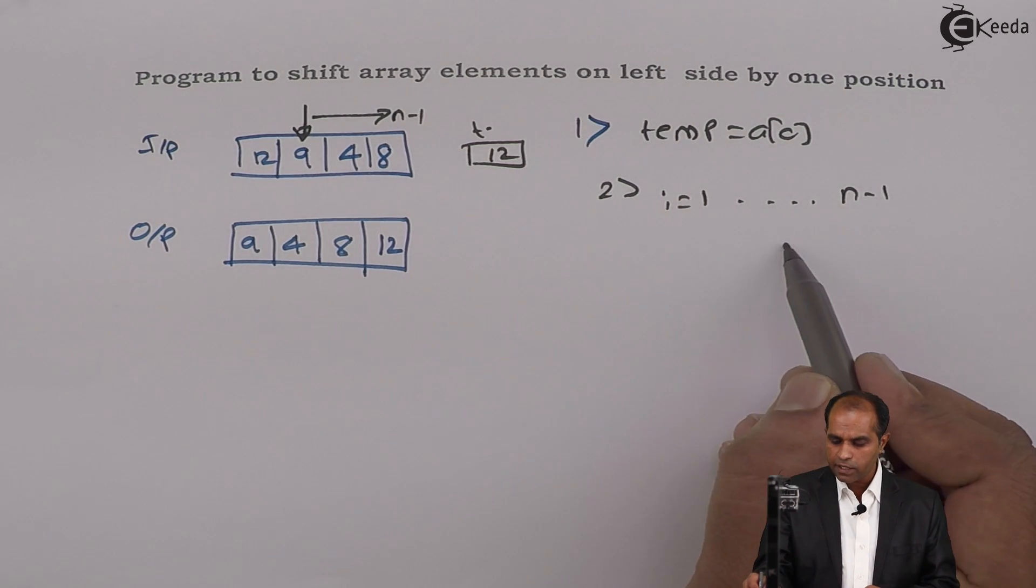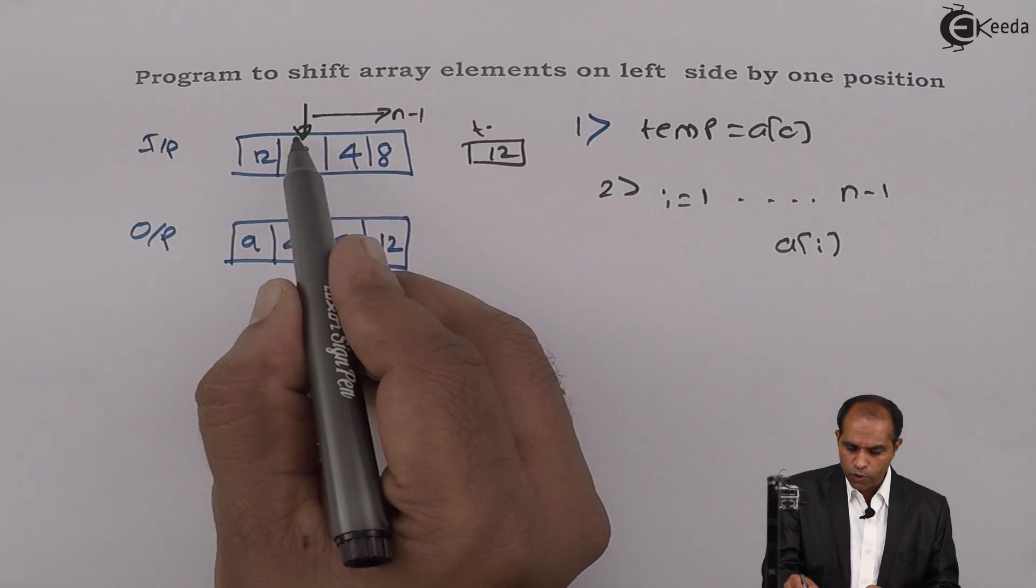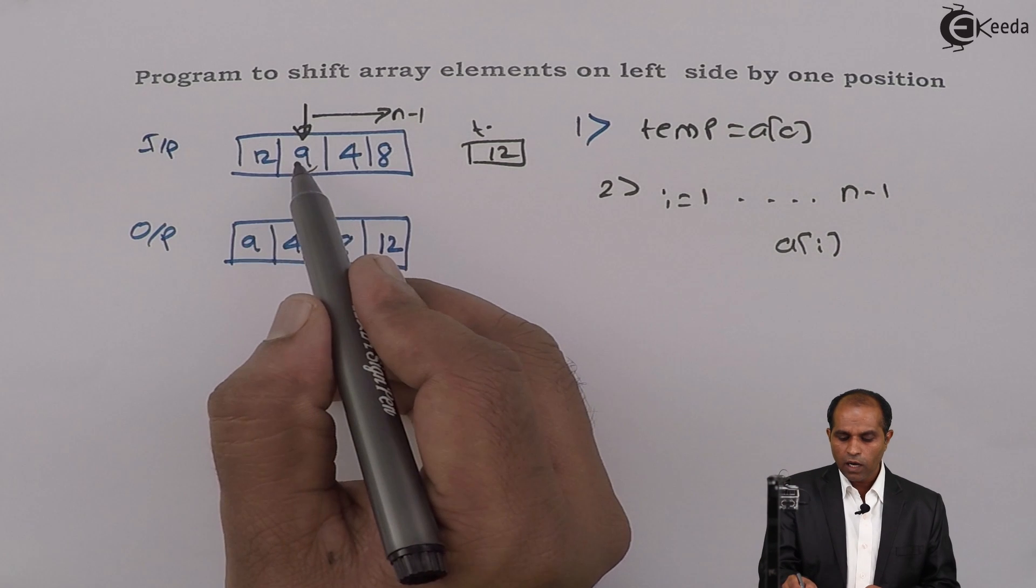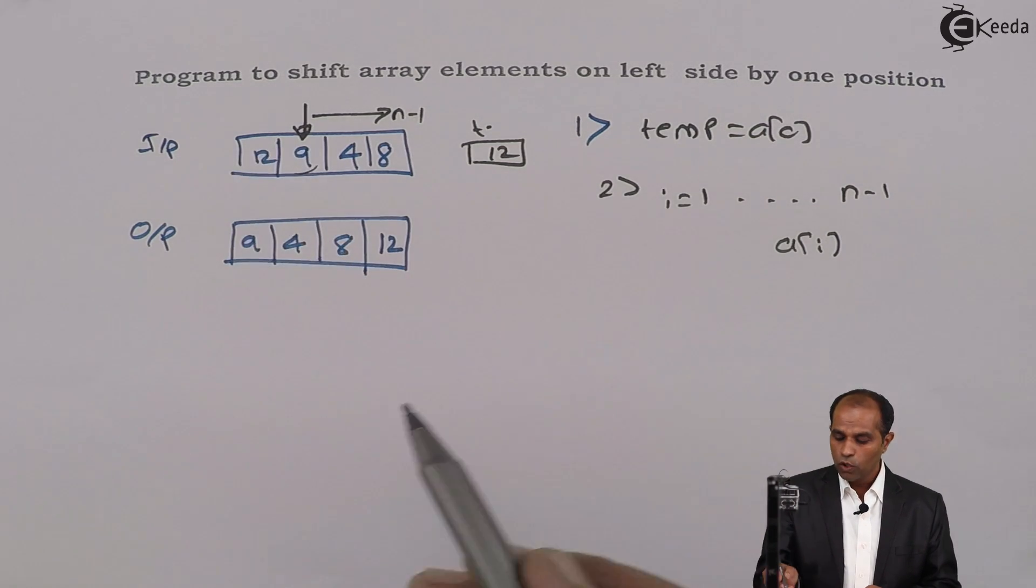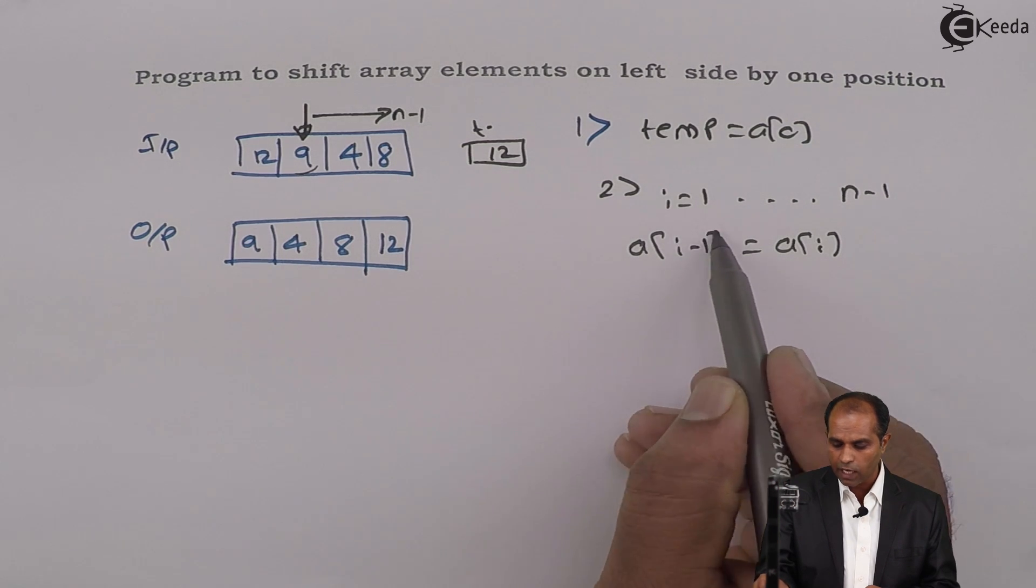So I have to start from i equals to 1 and go till n minus 1. So a[i] is n minus—sorry, a[i] is 1. Where you used to copy this particular a[1]? a[1], I need to copy it onto a[0]. So a[i], that is 1, should go to a[0], that is i minus 1.